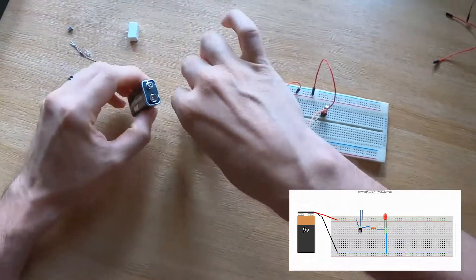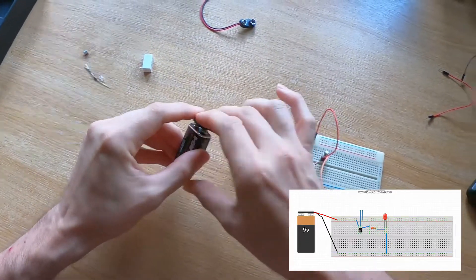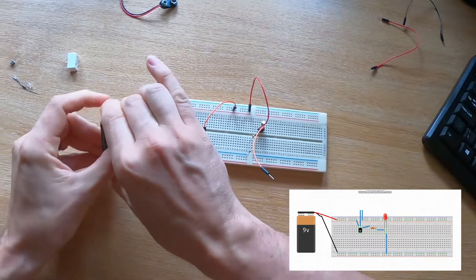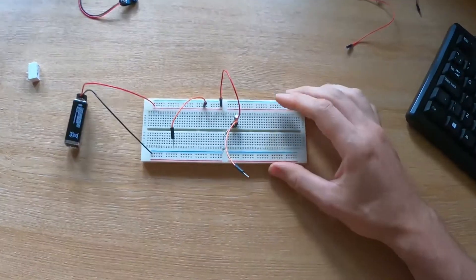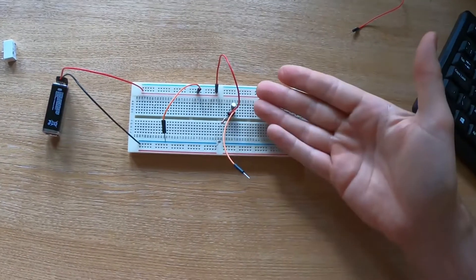Now if we take a battery and we put the battery on here, nothing should happen. There we go. So nothing's happening because the transistor is blocked.